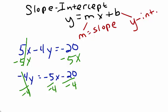Now I'm left with y equals positive 5 fourths x. 5 fourths becomes positive because we're dividing negative 5 by negative 4, and a negative divided by a negative gives us positive. Negative 20 divided by negative 4 gives us positive 5.